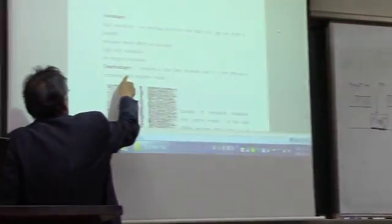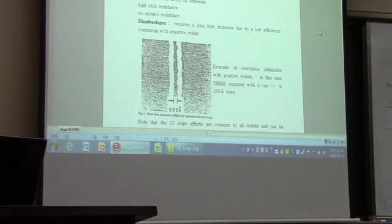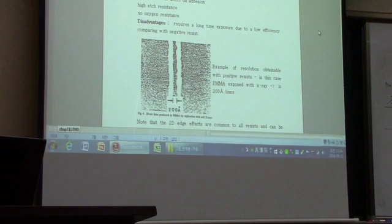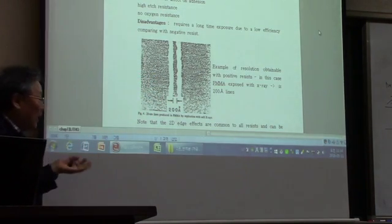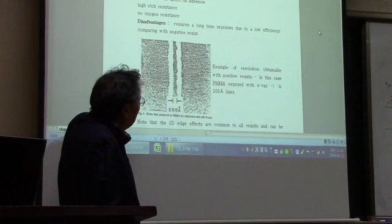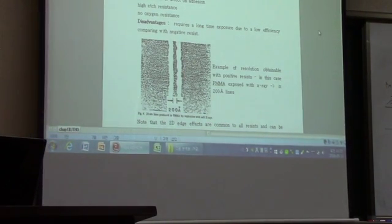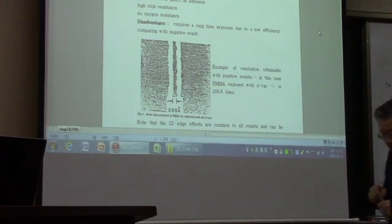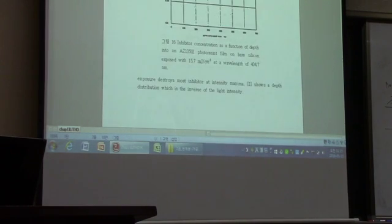The disadvantage of the positive photoresist is that it requires a long exposure time, because the inhibitor works more slowly than the promoters. It requires more light, so the throughput may not be as good as with the negative PR. Still, because of the high resolution, in modern industry we use positive PR instead of negative PR.